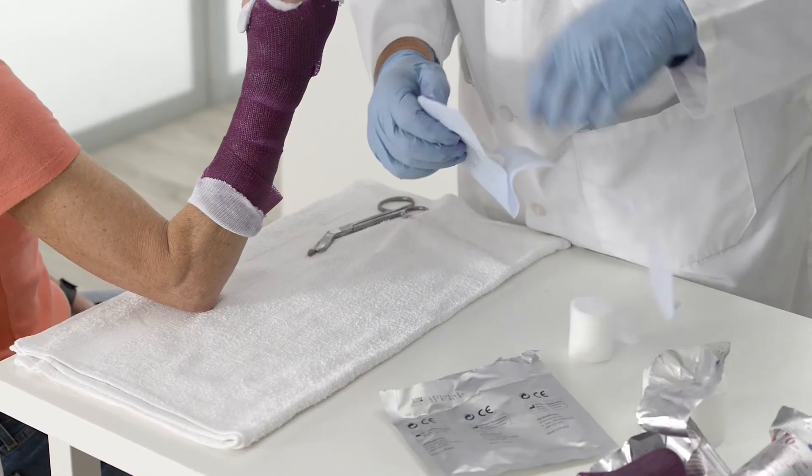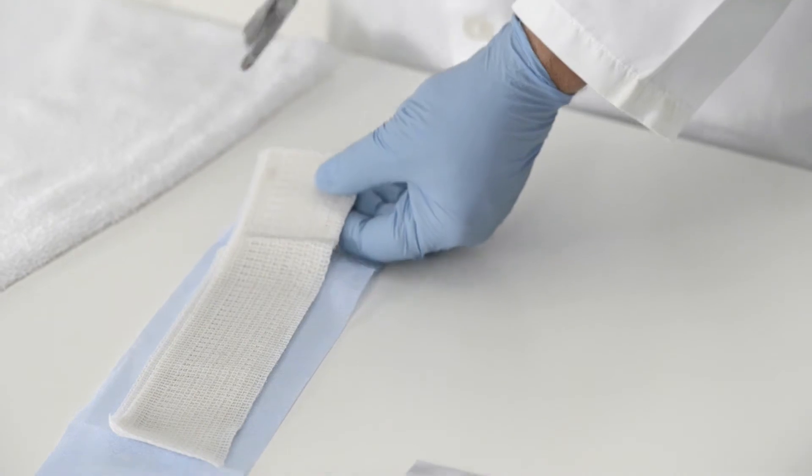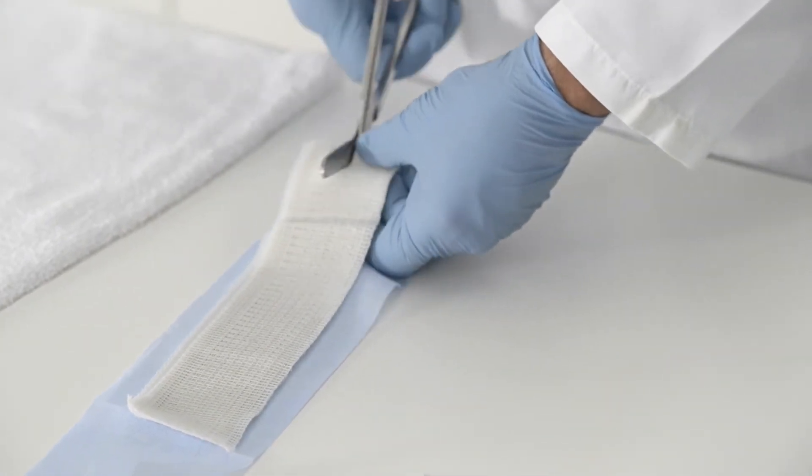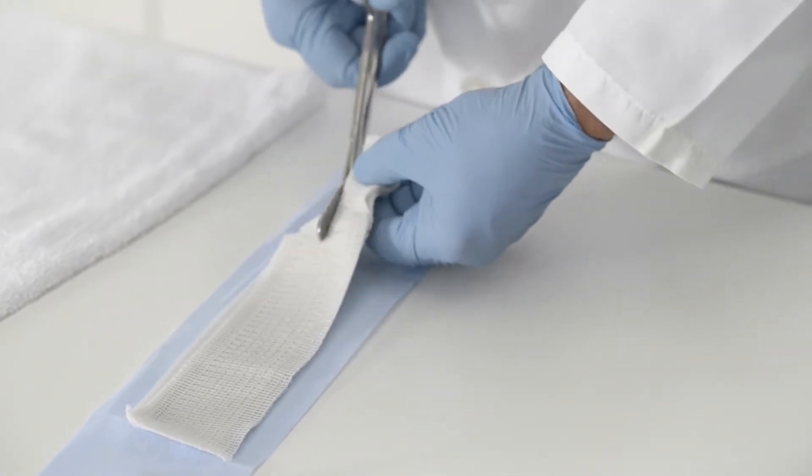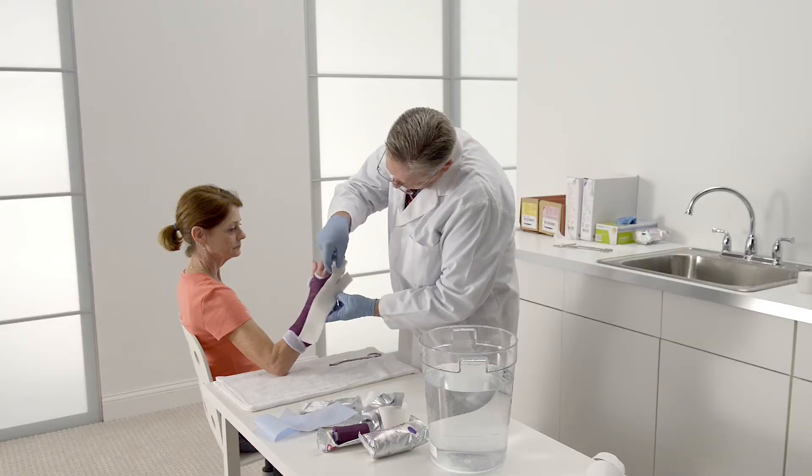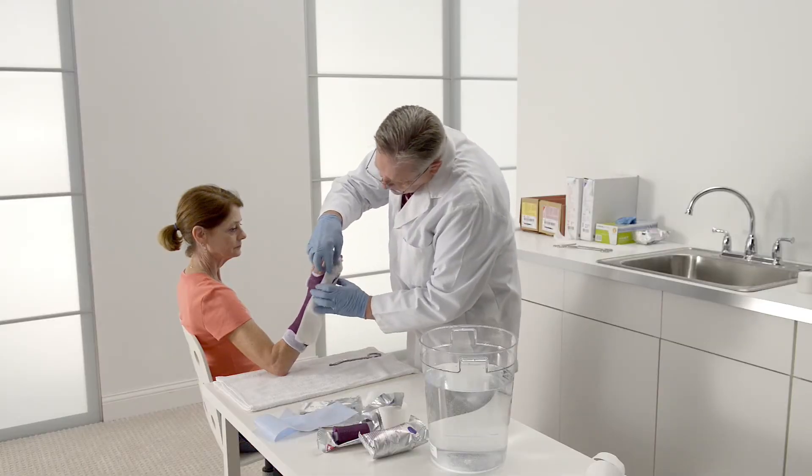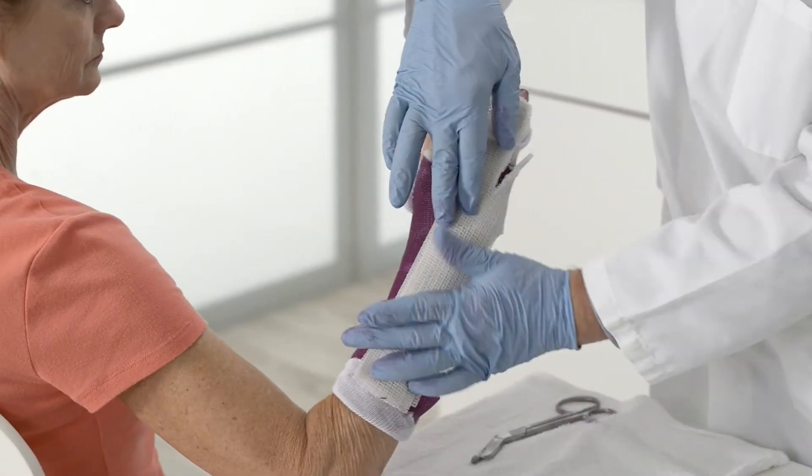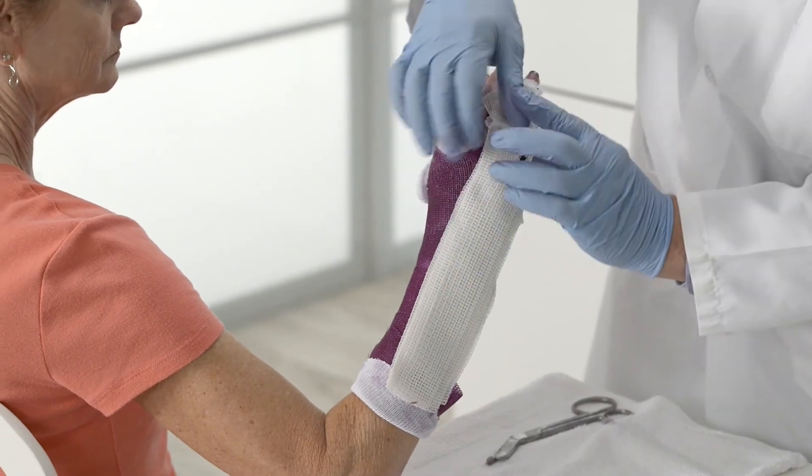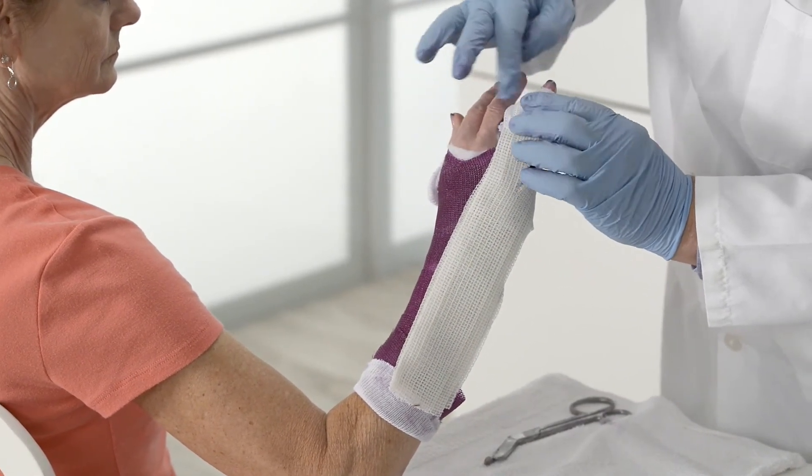We'll continue by applying the 3M PrimaCast unpadded splint. Cut a V at the top of the splint, and then wrap the V side of the splint around the affected fingers. Then wrap the long side of the splint around the ulnar side of the arm until it reaches just below the elbow.